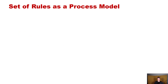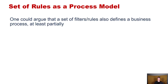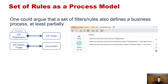So in general, when we think about rules, one could argue that a set of rules — or a set of filters — can be considered a process model, at least partially defining a process. For example: existence of ER registration, immediately followed by ER triage, and ER sepsis triage eventually followed by leukocytes — this comes out as just three filters in combination. You can easily argue that this is a definition of a process, quite a loose definition, but still a definition.